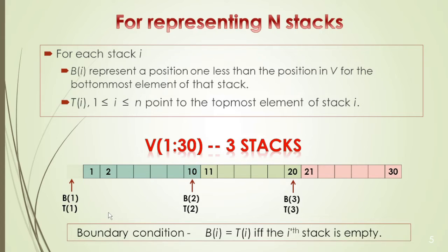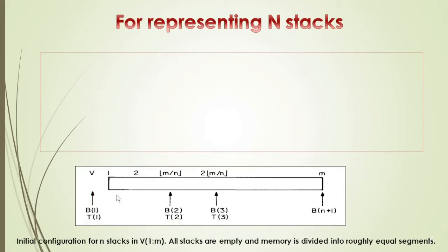Now the boundary conditions: stack empty and stack full. Stack empty is easy — if B[i] equals T[i], the i-th stack is empty. Initially before any push operations, T equals B. After pushing, T moves up and B and T are no longer equal, so the stack is not empty. For allocating N stacks in M memory locations, we use floor(M/N) per stack segment.